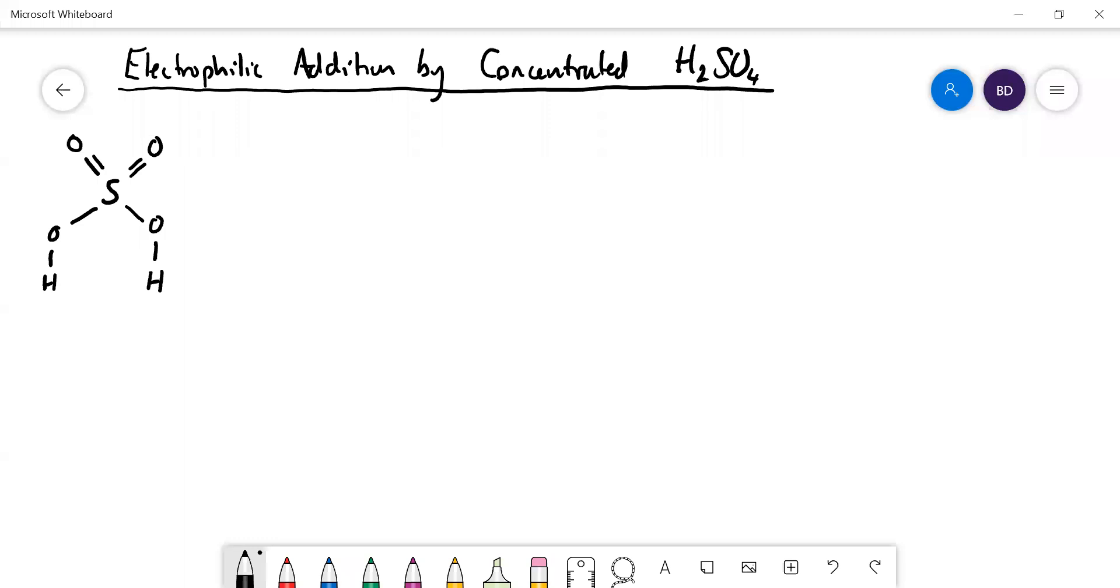Okay, so we've looked at the electrophilic addition to alkenes by HBr and by bromine, and now we want to look at addition by concentrated sulfuric acid.